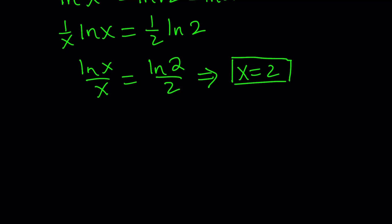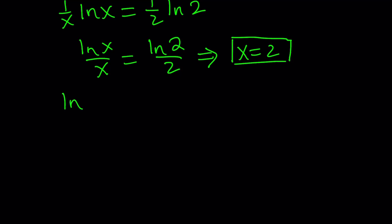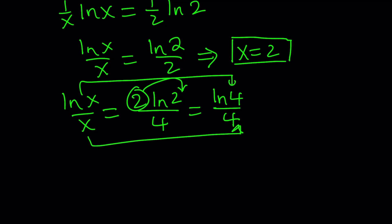By manipulating the expression on the right-hand side, we can do the following: multiply the numerator and the denominator by two. So double both of them. That gives you two ln two over four. But by using properties of logarithms, this time it's backwards, we can write this as ln two squared, which is four. So ln four divided by four. And this comparison shows you, just like before, that x equals four works. Awesome. We got both of the solutions. We were supposed to have two solutions: x equals two and x equals four.